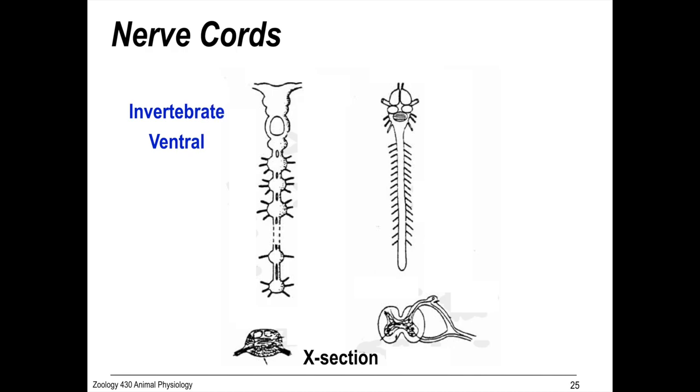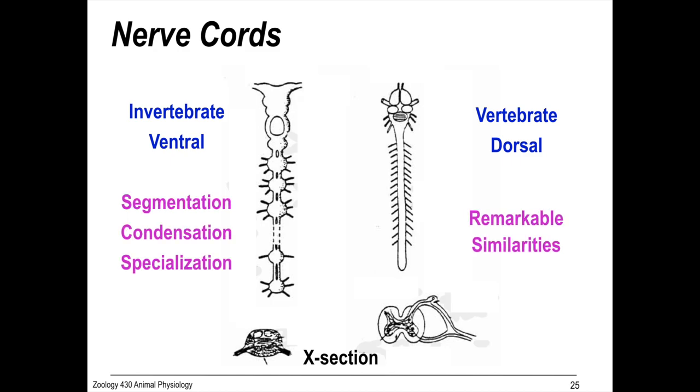We see remarkable similarities between invertebrates and vertebrates. They have nerve cords, which evolve mostly independently. So there's segmentation, condensation.